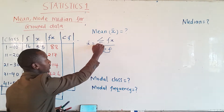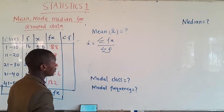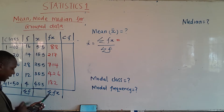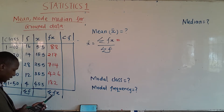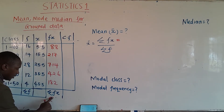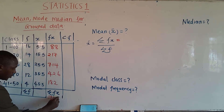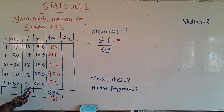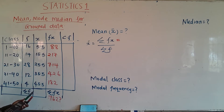From our formula we need the summation of fx and the summation of f. Adding all fx values: 182 + 426 + 714 + 217 + 88 = 1627. So Σfx = 1627. For Σf, we add all frequencies: 16 + 14 + 28 + 12 + 4 = 74.